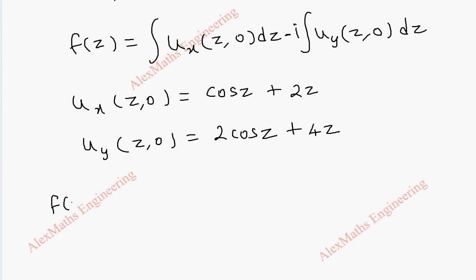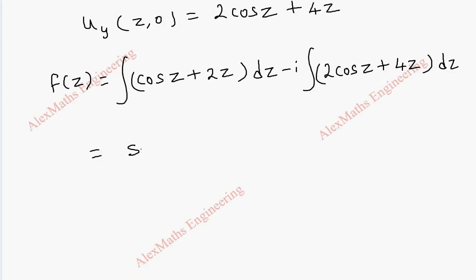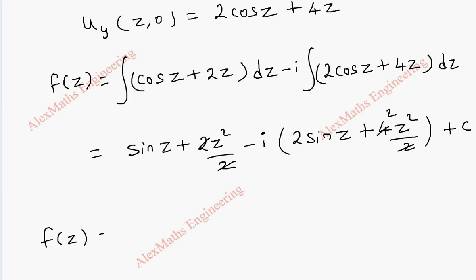So, f of z becomes integral cos z plus 2z dz minus i integral 2 cos z plus 4z dz. Now, we are going to integrate this. This is sin z plus 2z square by 2 minus i 2 sin z plus 4z square by 2 plus c. We can cancel these two and this becomes 2. So, finally, we got f of z in terms of z which is sin z plus z square minus i into 2 sin z plus 2z square plus c.